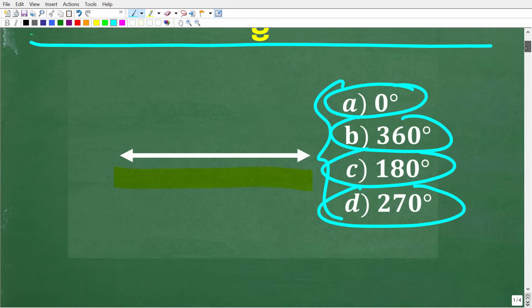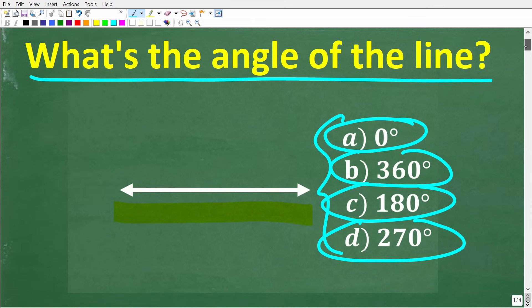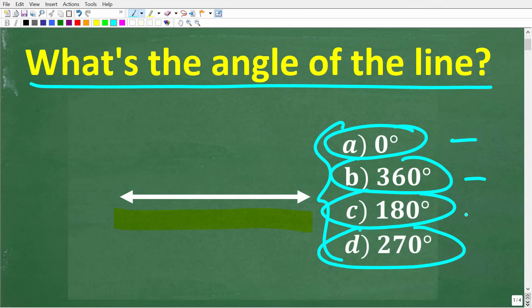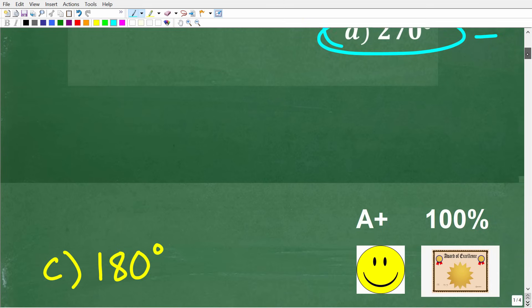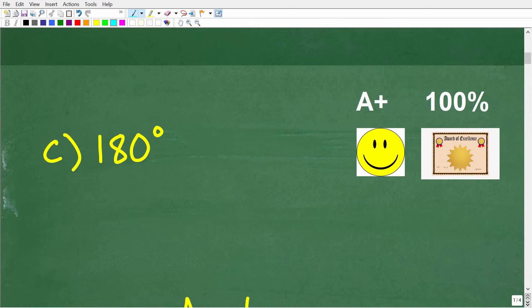All right, so one more time we're trying to find the angle of this line and here are our choices. So what is the correct answer? Well, the correct answer here is C, 180 degrees.